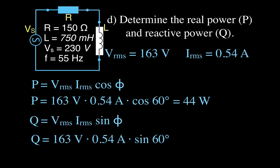For the reactive power Q, we use V_rms times I_rms times sine of the phase angle: 163 times 0.54 times sine of 60, giving us 76 VAR — volt-amperes reactive. VAR is the same unit as a watt, but we use the R to indicate reactive power. So reactive power is 76 VAR and real power is 44 watts.